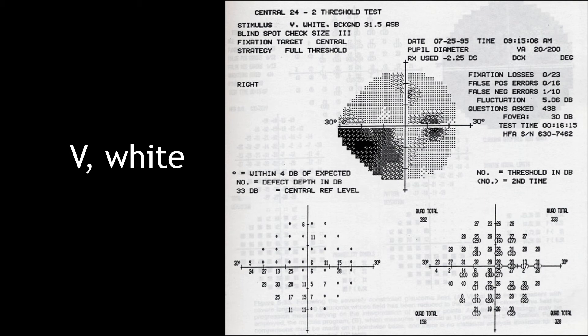In this printout we have gray scale, numeric map, and defect depth. At the bottom right we have the numeric map, and at each quadrant we have a number which is the summation of all threshold values in that quadrant — it is called quad total. In the follow-up period we can look at these numbers. If the quad total decreases over time, it means the defect in that area is getting deeper and deeper.